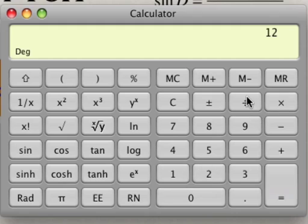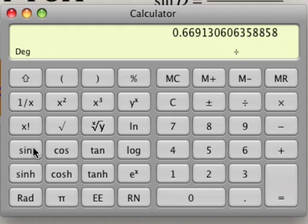So 12 divided by sine 42, and that comes out to be 17.93. If we're asked to round to one decimal place, then that becomes 17.9.